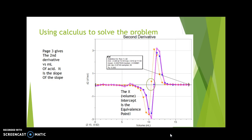The X-volume intercept, or the volume intercept, is the equivalence point. That's the volume of acid at which the moles of H+ equal the original moles of the hydroxide.